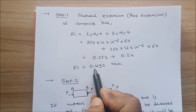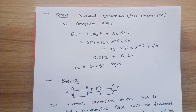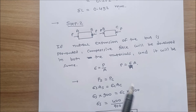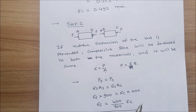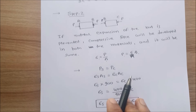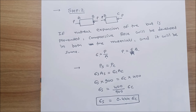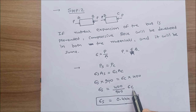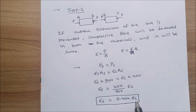Step number 2 — this free expansion is prevented, so compressive force develops in both materials and is the same. So P_s = P_c, which gives sigma_s·A_s = sigma_c·A_c. Substituting A_s = 900 and A_c = 400, we get sigma_s = (400/900)·sigma_c = 0.444·sigma_c. This is the relation between sigma_s and sigma_c.